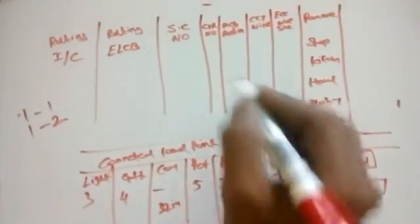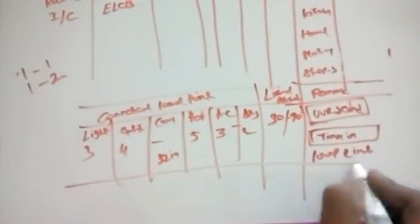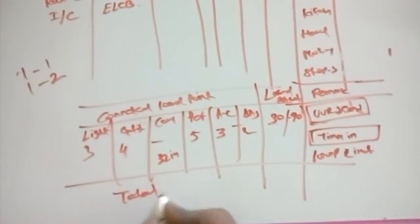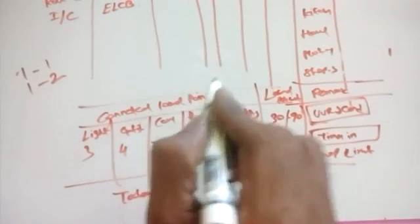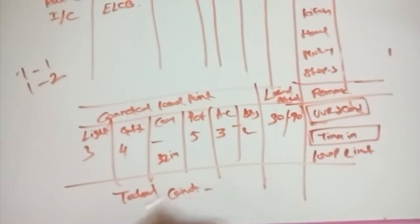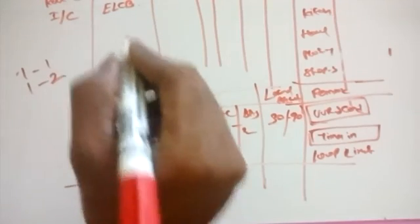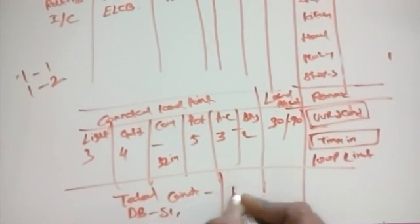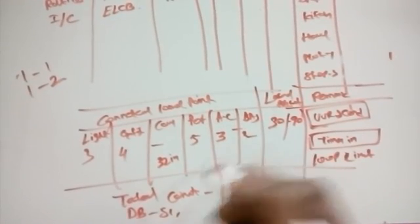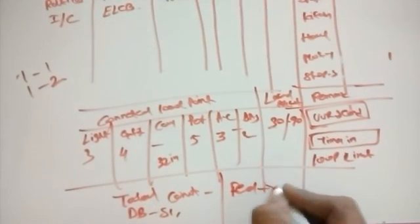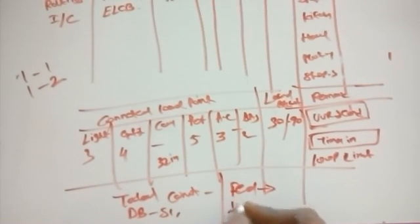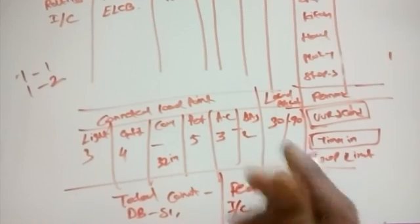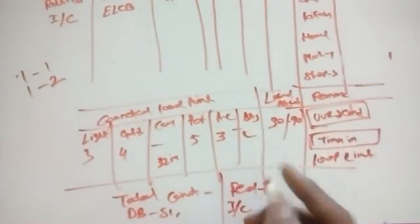At the bottom or top of the schedule you mention the total connected load — how much load is going to run in this project. You also mention where the power is fed from, such as a DB or SMDB, and where the incoming is placed — whether it is at the bottom or top of the panel. These are all important terms to mention for load scheduling.